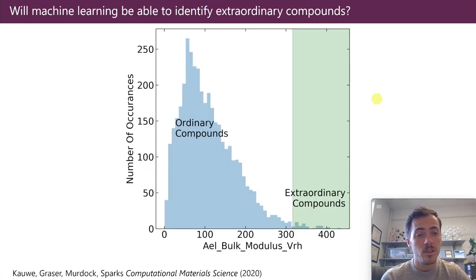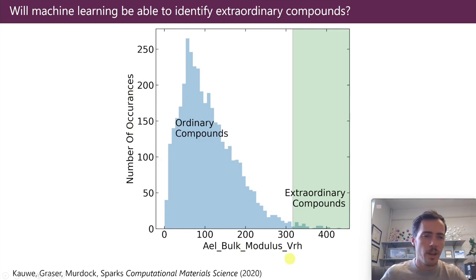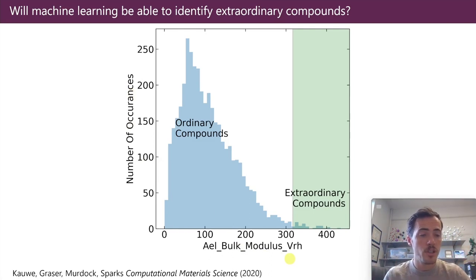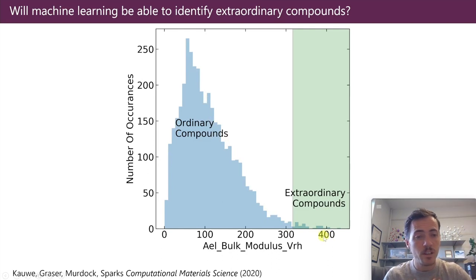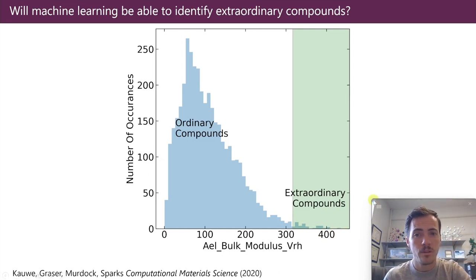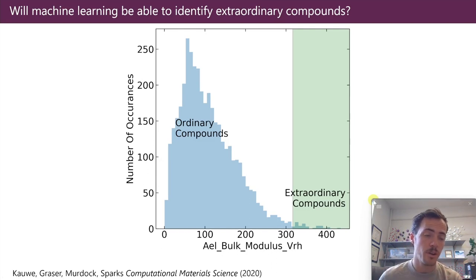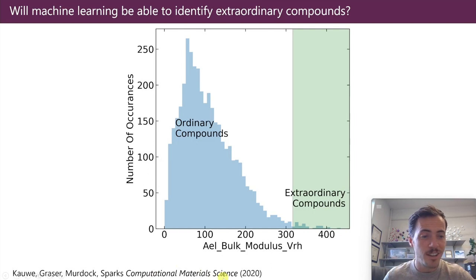Let's dive into this with a materials science example. What you're seeing here is a histogram of the number of occurrences of different bulk modulus values. We took everything from a database — either AFLOW or Materials Project — and made a histogram showing the distribution of bulk modulus values. The distribution is not normal; it is log-normal, with a longer tail on one side. Critically, there are very few materials out in that tail — we call those our extraordinary compounds. The question is: if you train only on ordinary compounds, would you ever be able to predict these extraordinary ones, and to what precision?